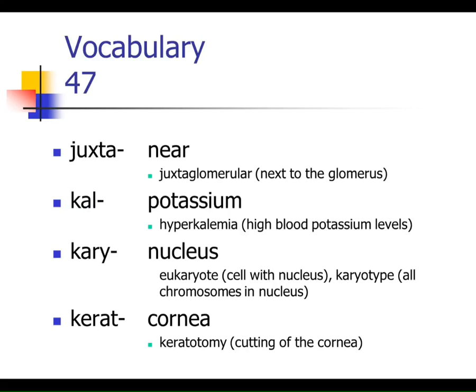So juxta means near. We'll see that when we get to the kidney — a structure called juxtaglomerular, meaning near structures within the kidney. Kal: the symbol for potassium is K, and hyperkalemia would be a high level of potassium in the blood.